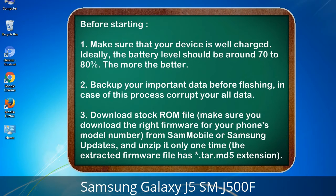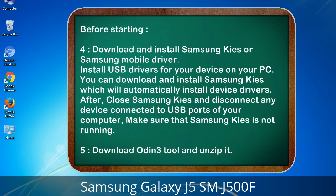3. Download the stock ROM file. Make sure you download the right firmware for your phone's model number from Sammobile or Samsung updates, and unzip it only one time. The extracted firmware file has a *.tar.md5 extension. 4. Download and install Samsung Kies or Samsung mobile driver to install USB drivers for your device on your PC. Samsung Kies will automatically install device drivers. After, close Samsung Kies and disconnect any device connected to USB ports of your computer. Make sure that Samsung Kies is not running.